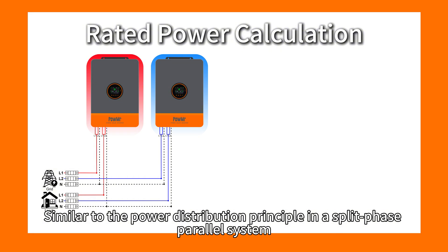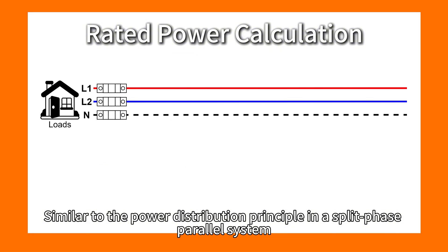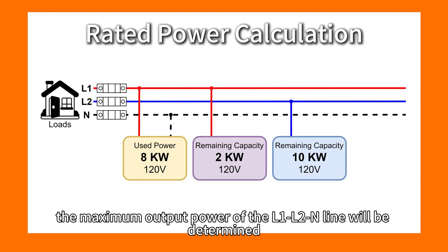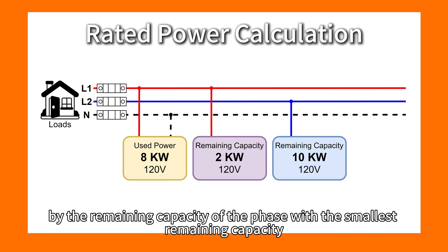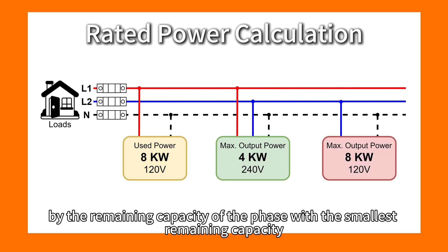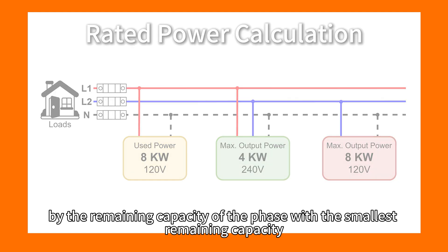Similar to the power distribution principle in the split-phase parallel system, if an 8kW load is connected to the L1-N line, the maximum output power of the L1-L2-N line will be determined by the remaining capacity of the phase with the smallest remaining capacity.